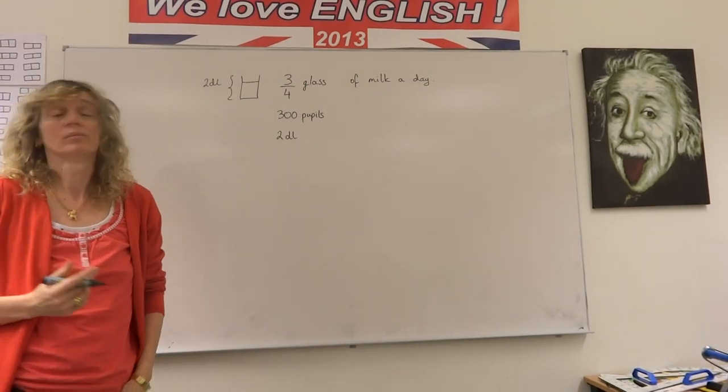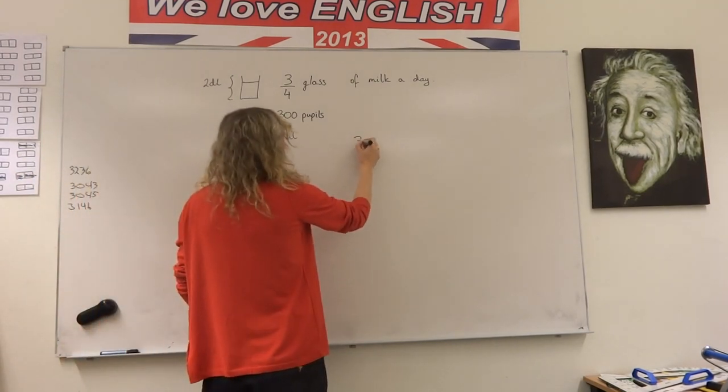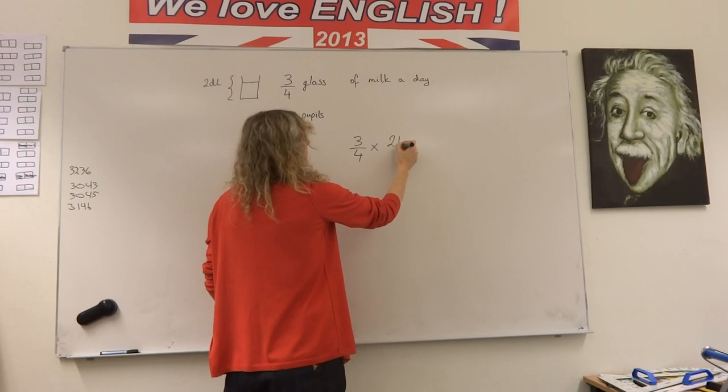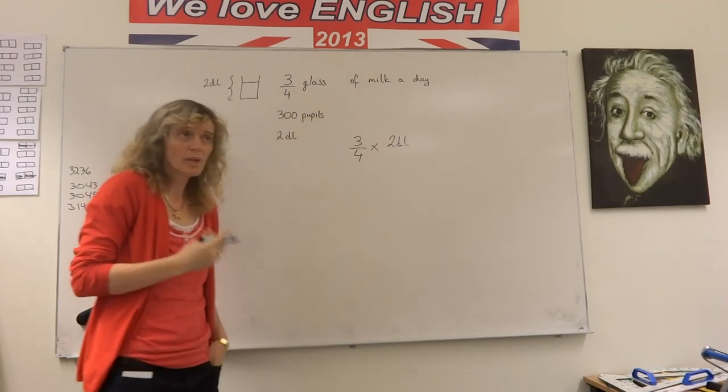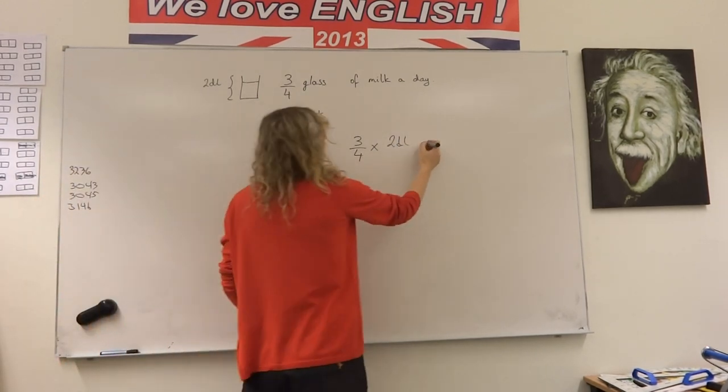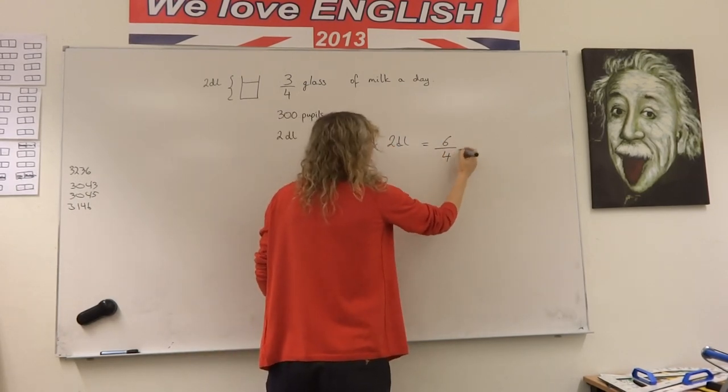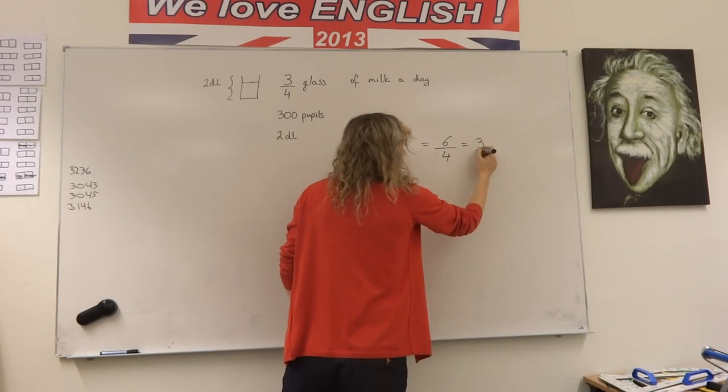Well, it would be three-quarters of two deciliters. That would give us one glass of milk, so that would be the same as three times two is six, six over four, which is three over two.